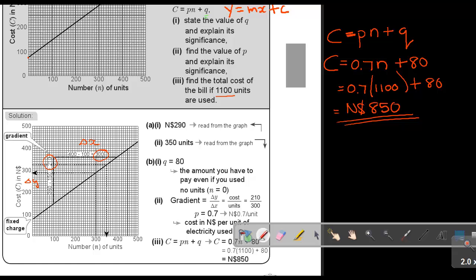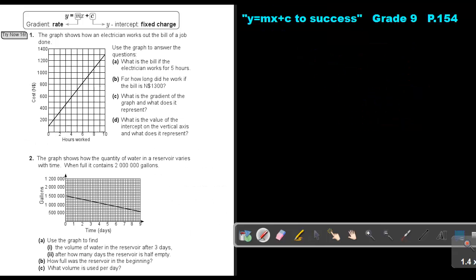Let's just go to an example. I want you to do for me, try now 16, and I want you to do number 1. Stop the video, and as soon as you are finished, you can continue with the video. So let's start. Try now 16. Let's just go through this again. This is your rate. Can you remember? Your gradient, your cost per something unit. And this was your y-intercept, which was your fixed charge or your basic charge.